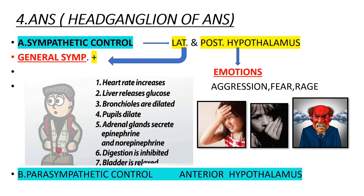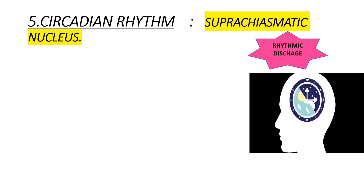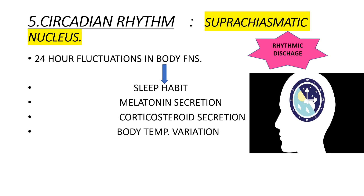Parasympathetic control is done by the anterior hypothalamus. Moving on to circadian rhythm: the suprachiasmatic nucleus of the hypothalamus controls circadian rhythm. It exhibits rhythmic discharge and is also known as the biological clock. Circadian rhythm refers to the 24-hour fluctuations in body functions, including sleep habits, melatonin secretion, corticosteroid secretion, and body temperature variation.